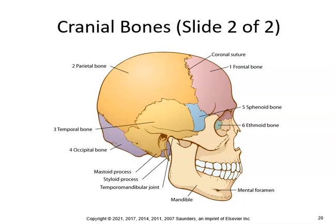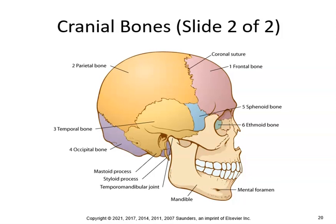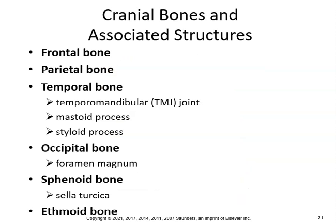Since this is a medical terminology class, you won't have to label any of these bones on quizzes. Key bones include: the frontal, parietal, temporal, and occipital bones, the sphenoid bone housing the sella turcica, and the ethmoid bone. The occipital bone houses the foramen magnum, and landmarks include the mastoid process, styloid process, and the TMJ.